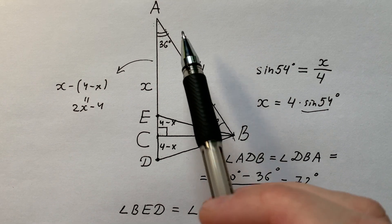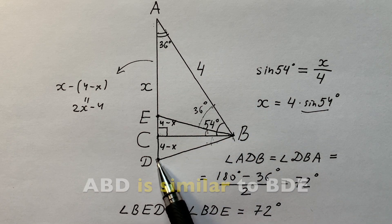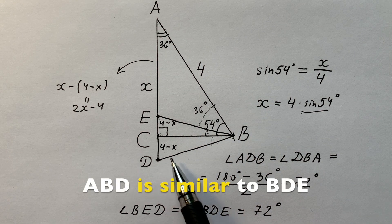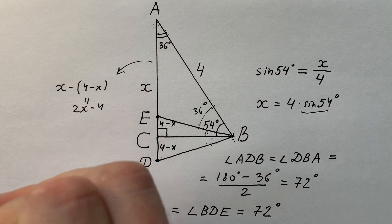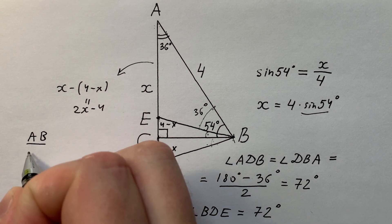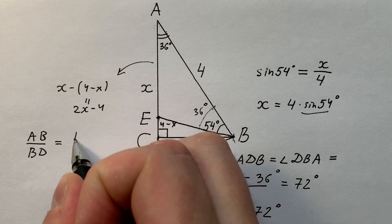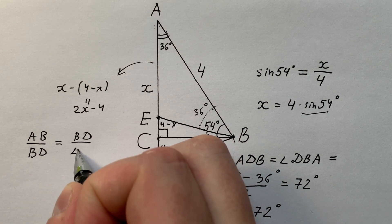Now let's admit that triangle ABD is similar to triangle BDE. So we can write a proportion that AB divided by BD is equal to BD divided by DE.